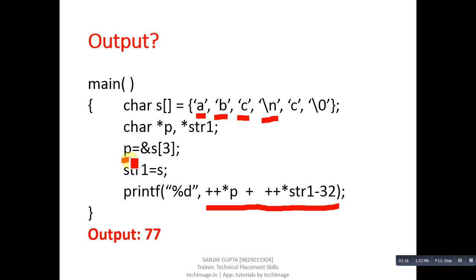b is 1, c is 2, and slash n is on three index, so three index address will be assigned into p. That's why p is containing slash n's address. Then s is completely assigned into str1, so str1 is also pointing s. Then printf will print an integer value, so first of all we have to calculate these two expressions.